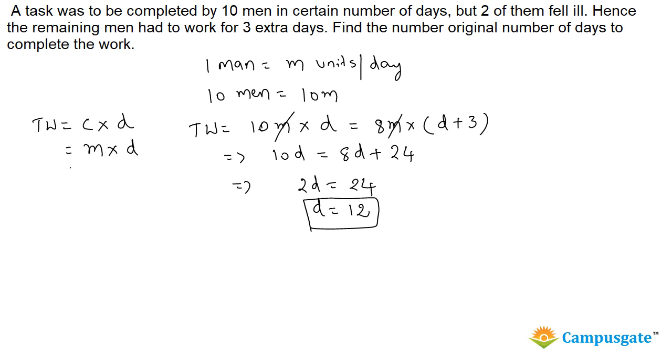It is given that instead of 10 men now we have got only 8 men. So men got changed in the ratio 10 is to 8. Please observe that initially 10 men had to be present on the job but only 8 men attended the job.